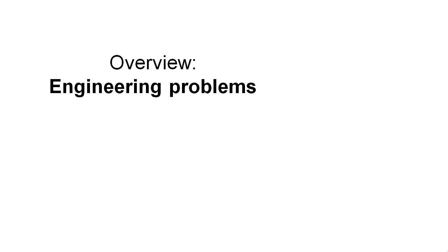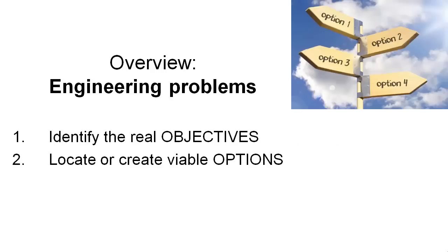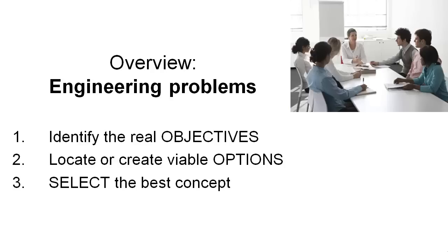Before we get into that, let's just revisit our engineering problems overview. We've learned how to identify the real objectives to our problems as part of the process. Step two was locating and creating viable options, which we did via a morphology method. Step three had us selecting the best concept, for which we taught a composite criterion method, which is quite commonly used.